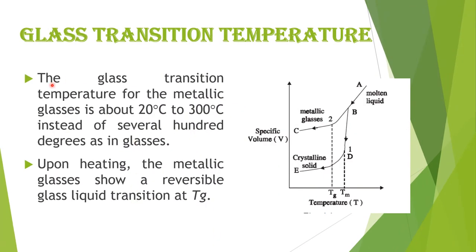The glass transition temperature for metallic glasses is about 20 to 300 degrees centigrade, instead of several hundred degrees as in ordinary glasses. Upon heating, metallic glasses show a reversible glass-liquid transition at TG.